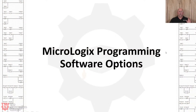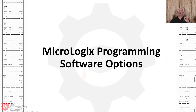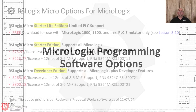Again, this is a subset of the full lesson over at the Automation School. By the way, 10% off — use the coupon code HOLIDAY24. That's 10% off everything except the software resell, the simulators. All the courses are 10% off. All right, let's go ahead and jump in here.